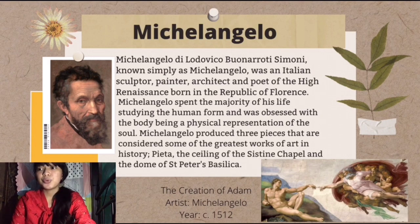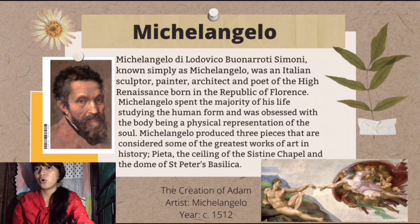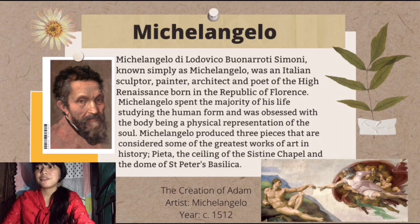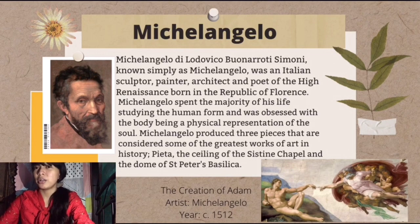Michelangelo produced three pieces considered some of the greatest works of art in history: the Pietà — a sculpture of mother Mary holding Jesus Christ — the ceiling of the Sistine Chapel, and the dome of St. Peter's Basilica. One famous example is the Creation of Adam, part of the Sistine Chapel ceiling and one of his most famous works.